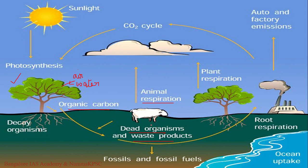Some undecomposed organic matter may get stored in peat layers of marshy soil, which may take a longer time to release carbon dioxide. Additionally, carbon dioxide can get dissolved in ocean water and gets converted to carbonate salts, or may be used by shell-forming organisms to form their shells. When such organisms die, their bodies sink to the bottom forming carbonate-rich deposits, storing carbon for a considerable period of time.